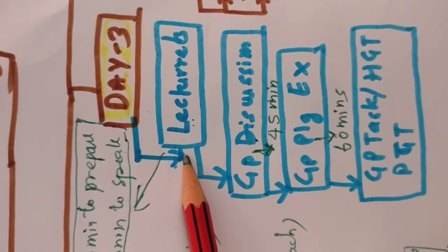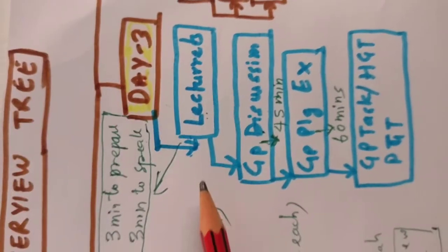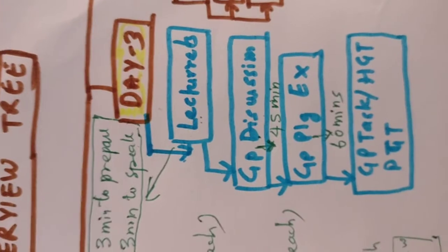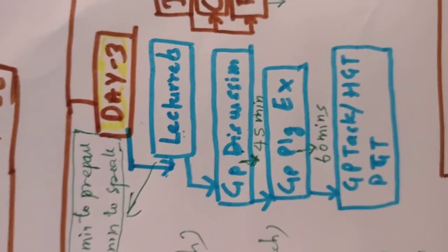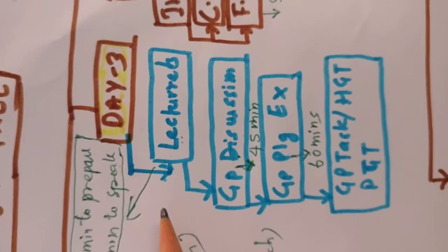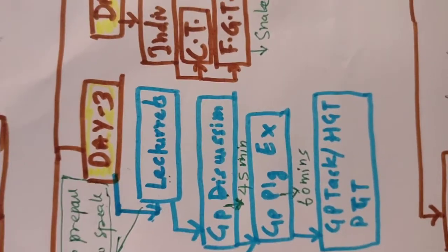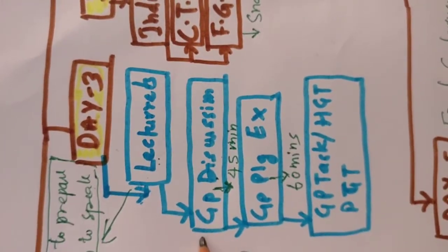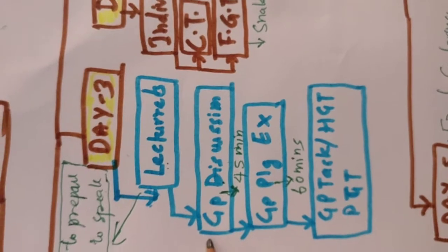Day three you'll have lecturette. In the lecturette you get three minutes to prepare and three minutes to speak. The group is divided into small parts of eight to ten. Then there are group discussions, about 45 minutes. Three or four topics are given.